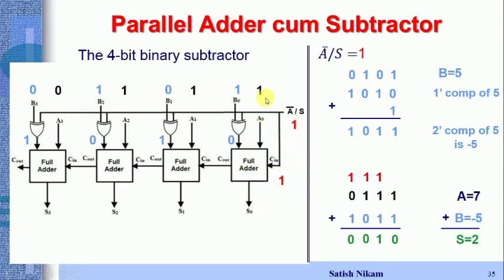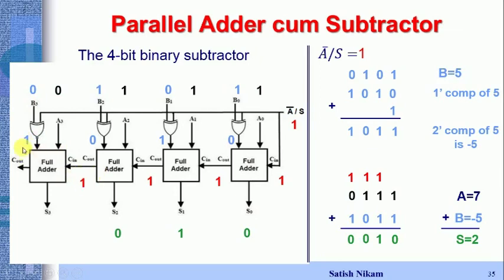For full adder 1: A0=1, B0 complemented=0, C-in=1 → S0=0, carry=1. Full adder 2: A1=1, B1 complemented=1, C-in=1 → S1=1, carry=1. Full adder 3: A2=1, B2 complemented=0, C-in=1 → S2=0, carry=1. Full adder 4: A3=0, B3 complemented=1, C-in=1 → S3=0, carry=1.